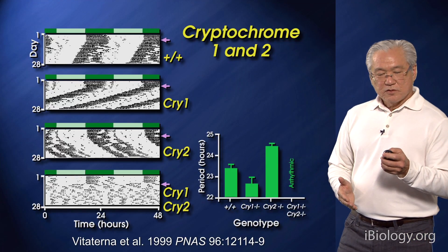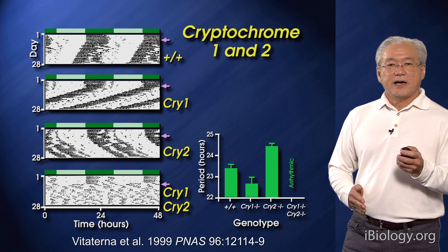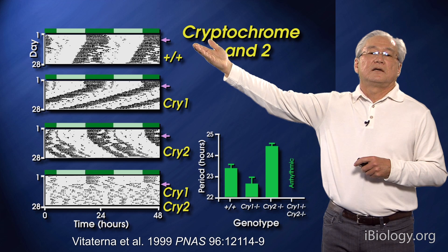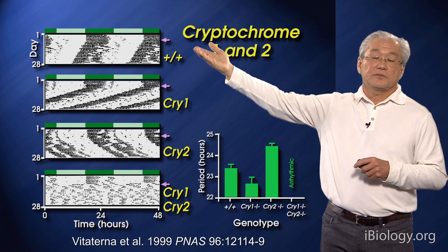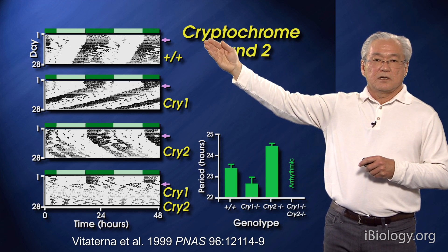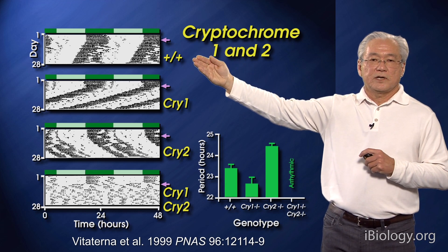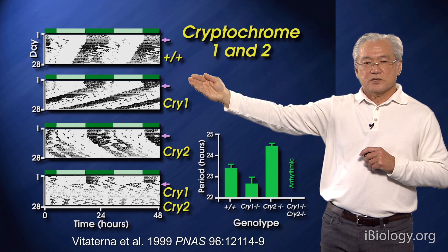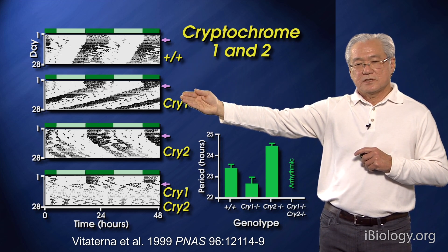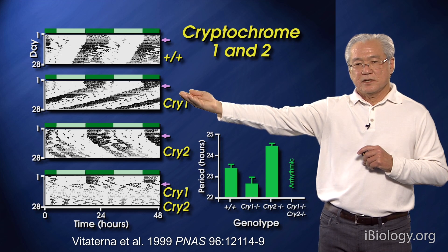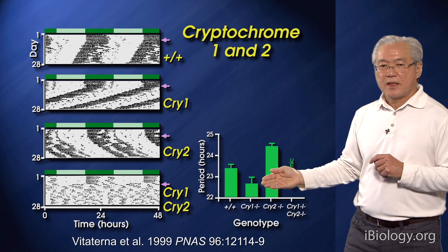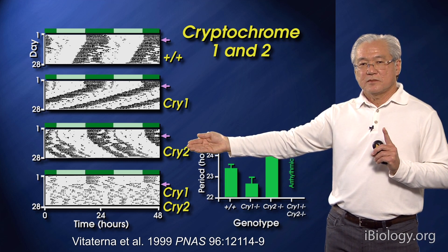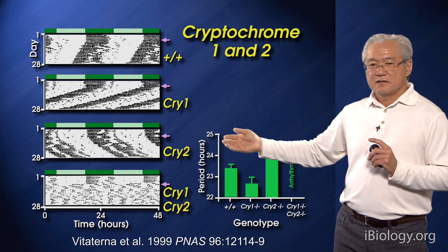One way that we have looked at this is to go back and examine some of what we would call the classic mutants of either period or cryptochrome, which are shown here for cryptochrome 1 and 2 — these are loss-of-function or knockout mice. If you delete cry1, the mouse still has a rhythm, but it's one hour short. If you delete cry2, the mouse still has a rhythm, but in this case it's long.